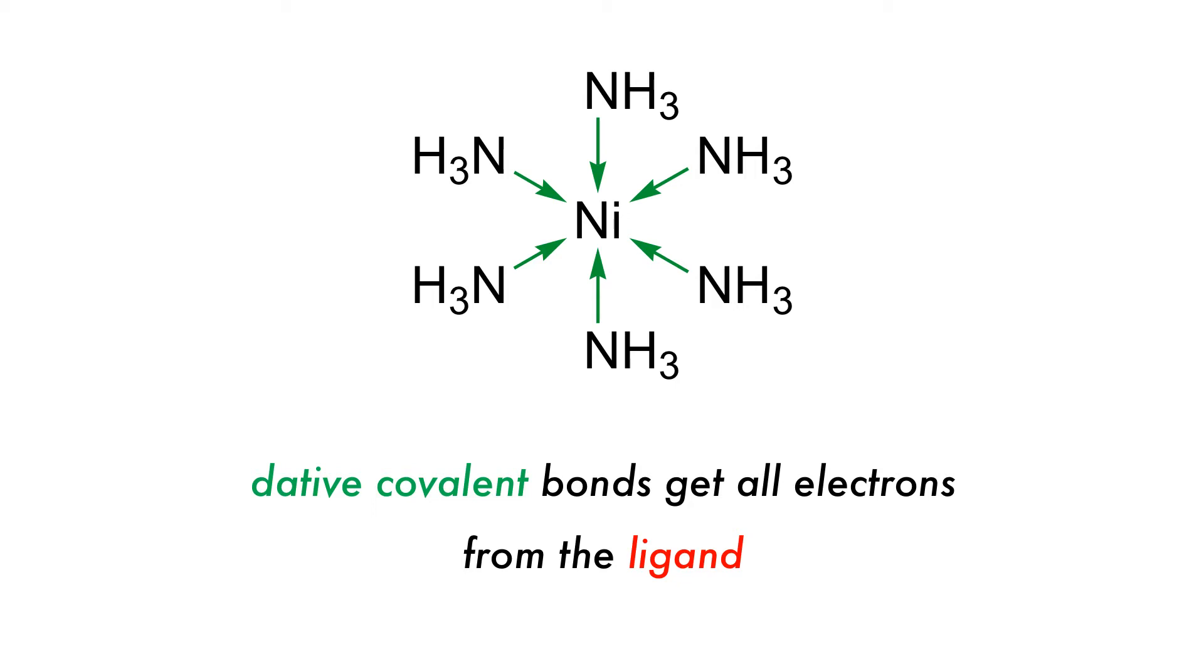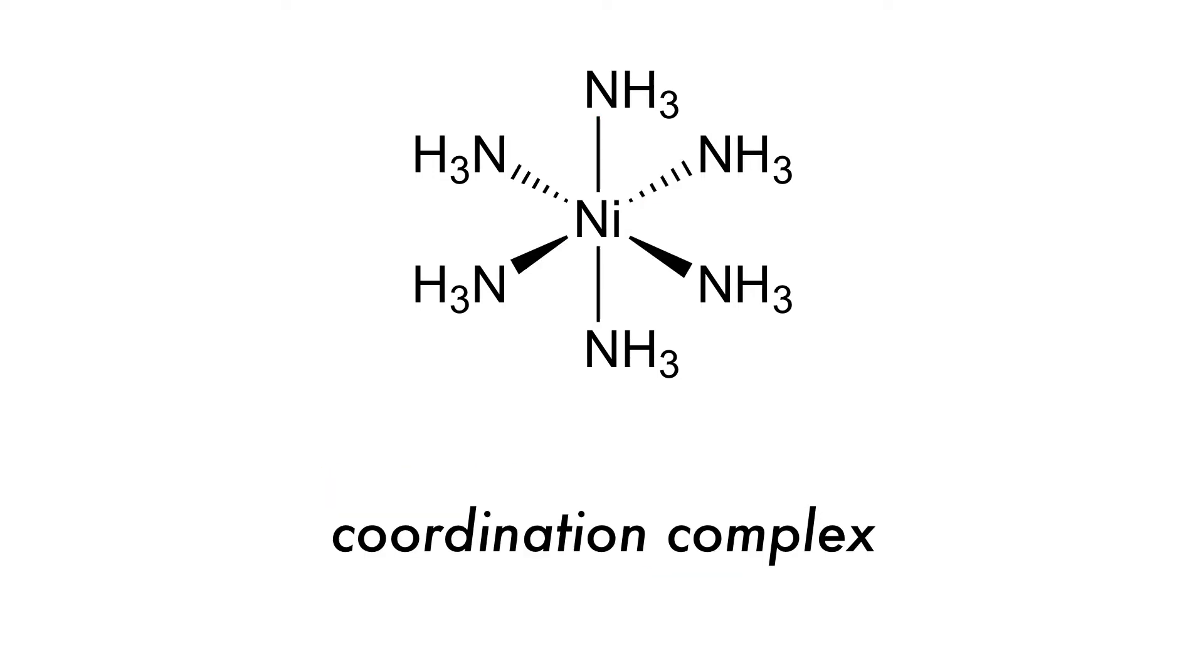This is similar to the formation of Lewis adducts. In this example, the Lewis base ammonia donates its lone pair of electrons to the central nickel ion, forming an octahedral complex, which we can show by using an arrow pointing from the Lewis base to the Lewis acid. We can show that this is a coordination compound by placing square brackets around it and writing any charge to the top right.